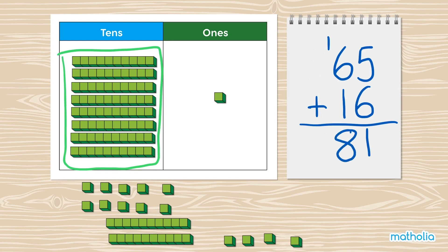So, 65 plus 16 equals 81. That was fun! Watch the next video to see how we can use bar models to add.